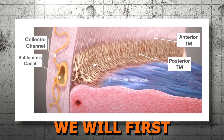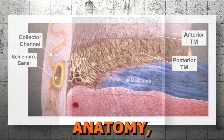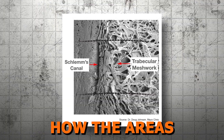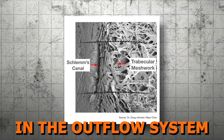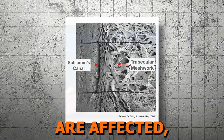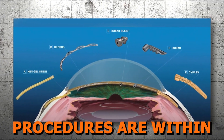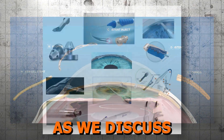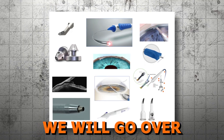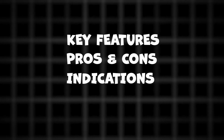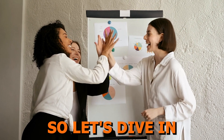As we break down this class, we will first quickly review angle anatomy, then discuss the mechanism of action of this class, how the areas of resistance in the outflow system are affected, and then go into some detail on which available MIGS procedures are within this class. As we discuss each MIGS device, we'll go over its key features, the pros and cons, indications for usage, as well as contraindications to help with patient selection.